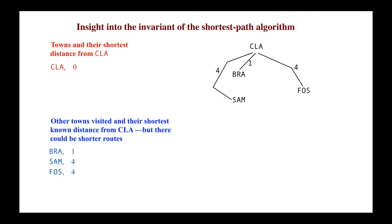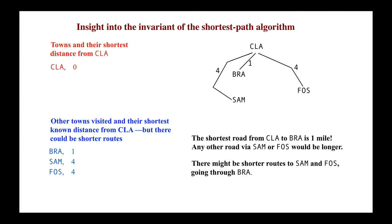After studying the blue list and looking at the map, it was clear that the shortest road to Bray was one mile. But there might be shorter roads to Sam and Foss, perhaps going through Bray. Since we now knew the shortest road to Bray, one mile, we moved that information to the red table.